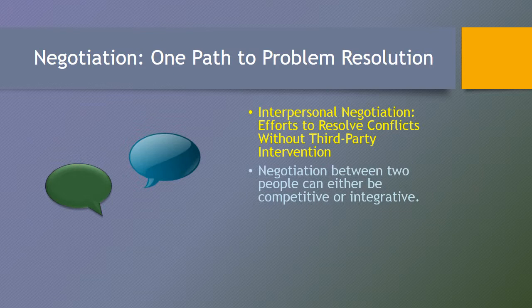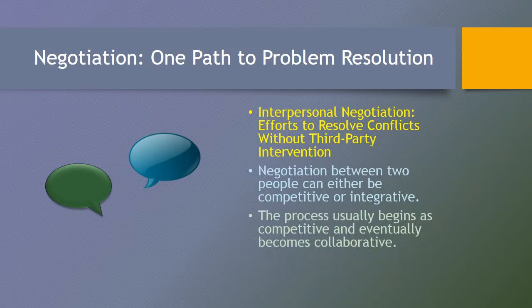Negotiation between two parties can either be competitive or integrative. The process is usually a bit messy and unstructured, and usually begins as competitive and eventually becomes collaborative. It begins as competitive because a conflict causes us to become defensive or offensive — it's related to the fight-or-flight response we have in our primitive brain. When we perceive a threat to our well-being, and someone blocking our path to our goals, we react to protect ourselves. But when we realize this is happening, we can take steps to change the conflict into one where we are more receptive and less defensive so that problem solving can happen.